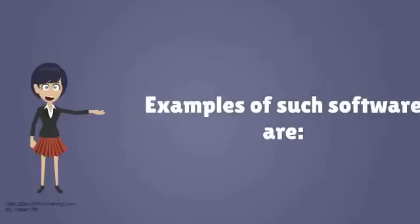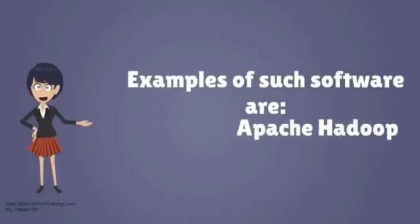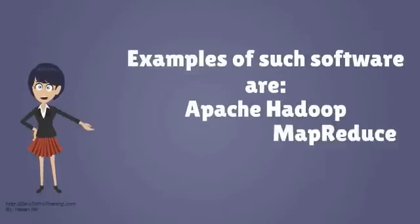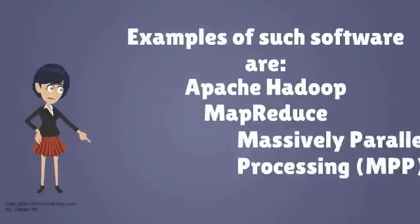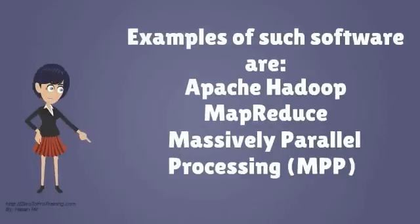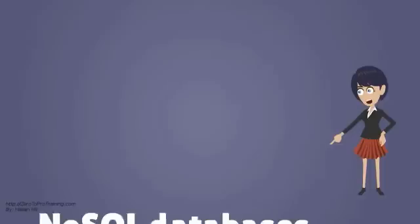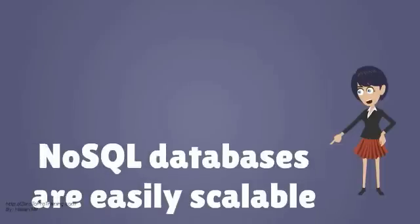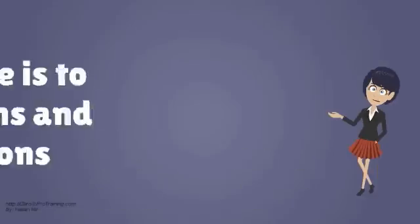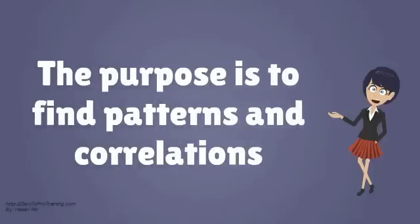Examples of such software are Apache Hadoop, MapReduce, and massively parallel processing. NoSQL databases are created, which are easily scalable, as opposed to SQL-based relational database systems.